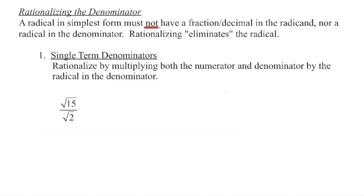Dividing radicals follows the same process as multiplying: divide the coefficients, divide the radicands, then simplify. For a radical to be in simplest form, there can be no removable factor in the radicand, no fraction or decimal in the radicand, and no radical in the denominator. For example, if we try 15 divided by 2, we get 7.5 — a decimal — so we need another approach.